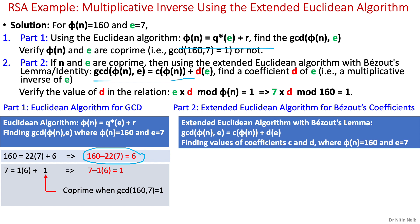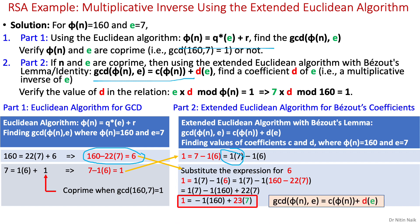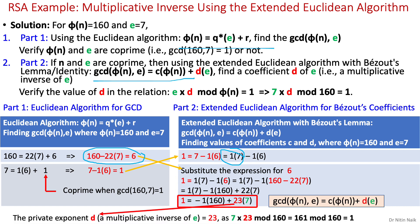Part 2 is the extended algorithm, where we utilize all the rearranged equations for backward substitution to calculate d as the coefficient of e. We start backward substitution in reverse order with the last GCD equation having subject 1. We rewrite the equation and use a multiplier of 1 on 7 to make it resemble Bezout's lemma for finding coefficient d of e. In subsequent steps, we continue backward substitution, substitute the expression for 6, then expand it to obtain the final equation. We obtain the value of d as the coefficient of e, and verify that e × d mod phi(n) = 1, completing the RSA key generation process.